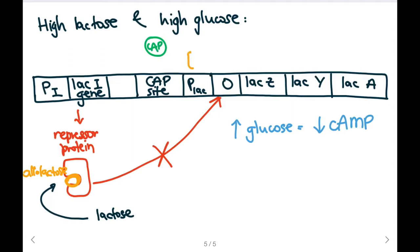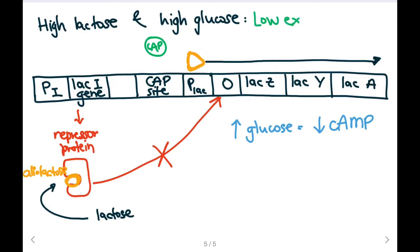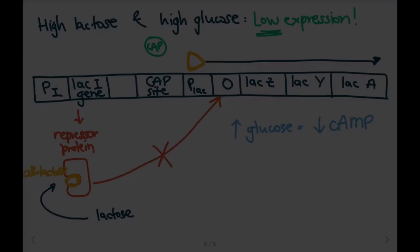RNA polymerase will still bind to the promoter, but because there's no CAP molecule, RNA polymerase will bind loosely. So transcription will occur, but there will be low levels of transcription because RNA polymerase was bound loosely to the promoter. Here we'll have low expression of our LAC operon.